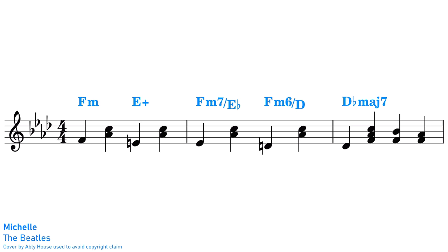In "Michelle" by The Beatles, on a few occasions we get a line cliché where we start on an F minor chord, and then the lowest note of the chord — F — descends by a semitone each time until we arrive at D flat.